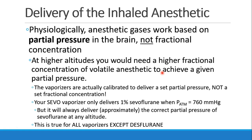The patient's still getting 1% isoflurane, but 1% of what? A very thin air. And it's not the 1% that the brain needs to have anesthesia — it's the 7.6 millimeters of mercury. And our vaporizers are actually calibrated to deliver a partial pressure, not a fractional concentration. Even though the dial says 1%, it's really calibrated to deliver a partial pressure. So your SIVO vaporizer actually only delivers 1% when you're at atmospheric pressure of 760 at sea level, but it will always deliver approximately the right partial pressure at any altitude. And this is true for all of our vaporizers except desflurane.